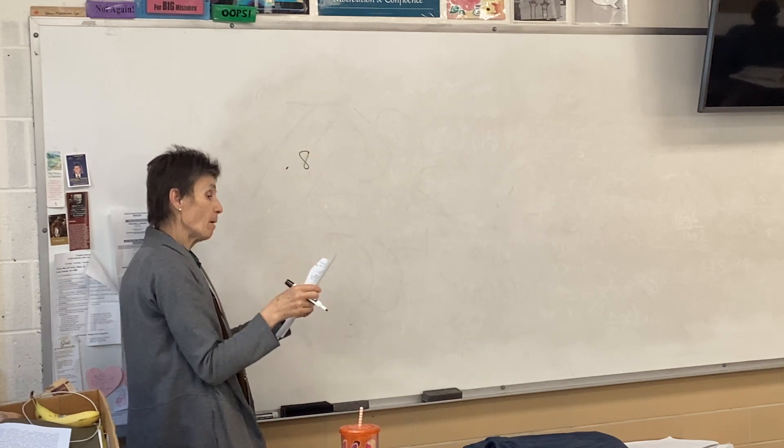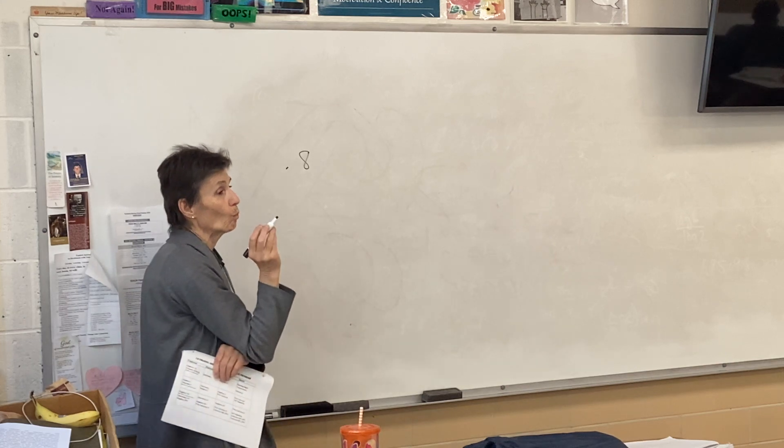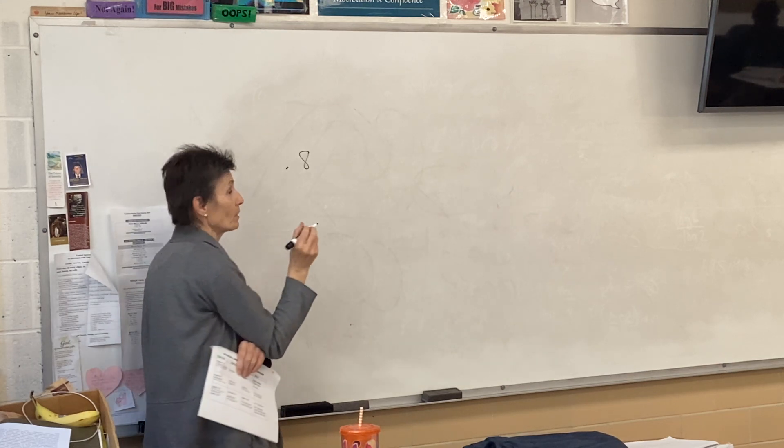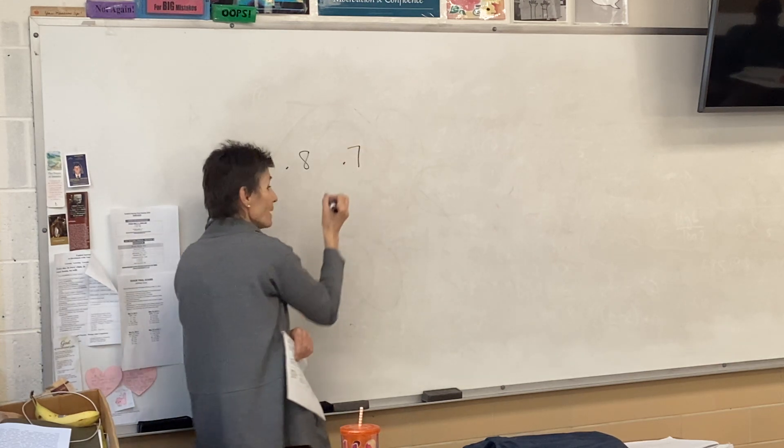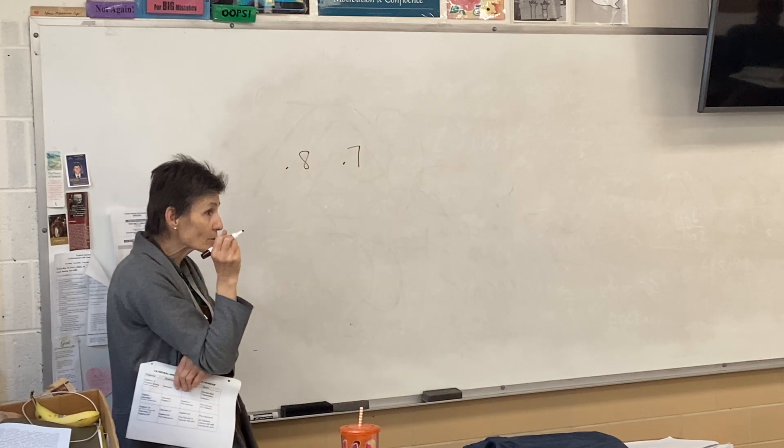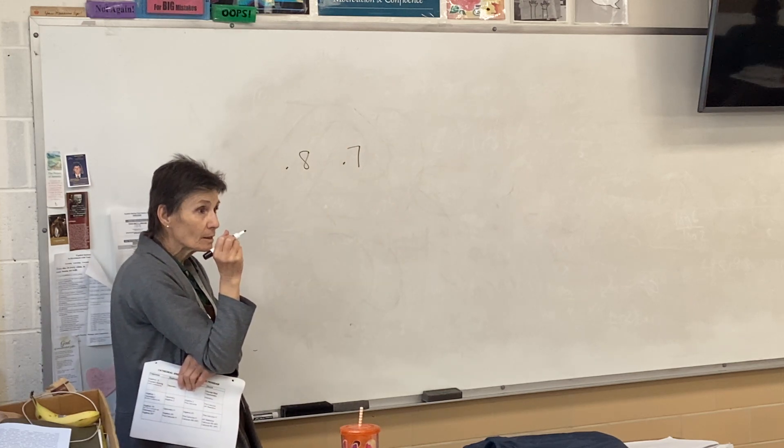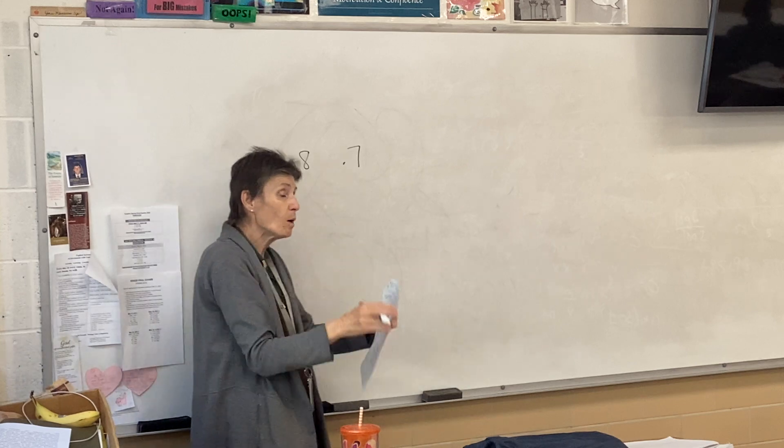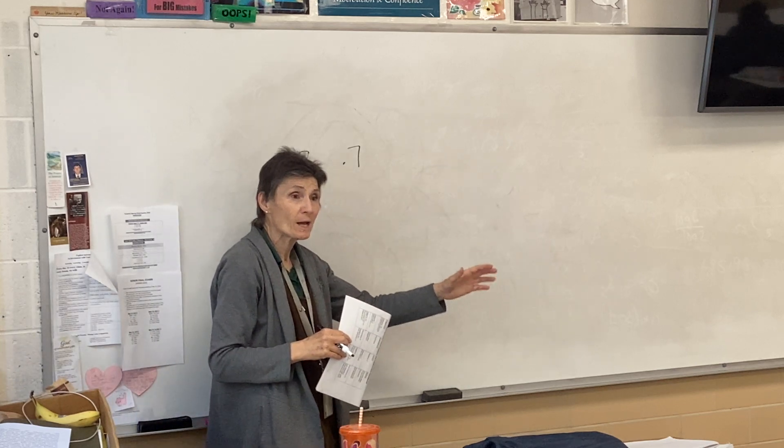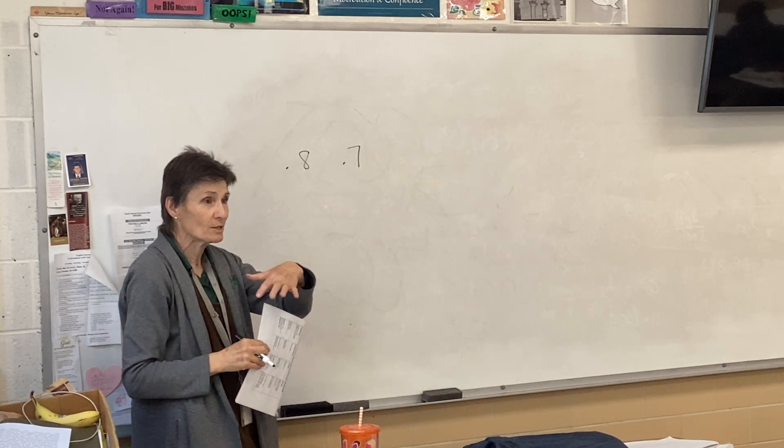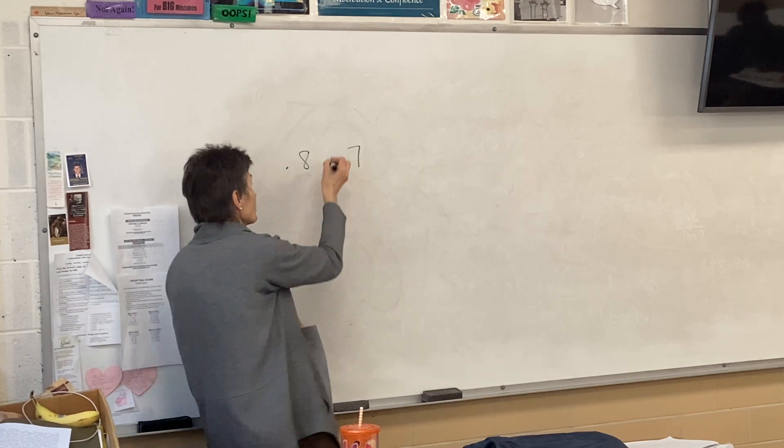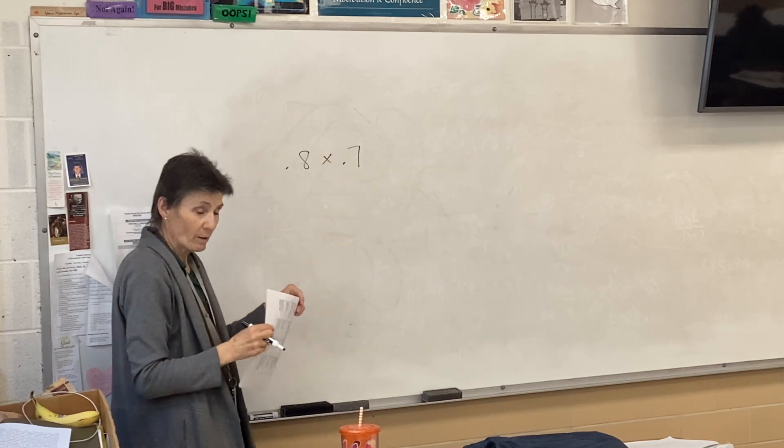If a candy is chosen from each bag, what is the probability that neither will be yellow? So what's the probability that from Trey's bag, it won't be yellow? 0.8. Does everybody get 0.8? Yeah. How about Jada's bag? It won't be yellow. 0.7. What am I going to do with those two numbers? Multiply them. Because I want a not yellow out of Trey and a not yellow out of Jada, right? So the answer is? 0.56.